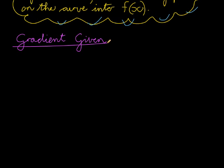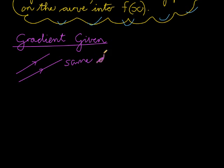What does it mean to give the gradient indirectly? For example, they might say the line you're trying to find is parallel to another line. If two lines are parallel, they have the same direction, which means they have the same gradient — the gradient of one line equals the gradient of the other.